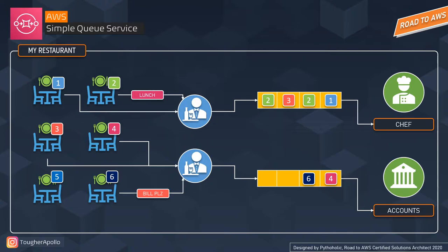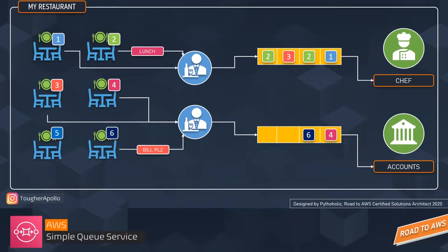These messages are processed asynchronously — not synchronously. They are taken by a single queue and shared across consumers who can process the information. This is your second type of message queue processing: asynchronous processing.